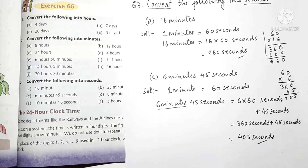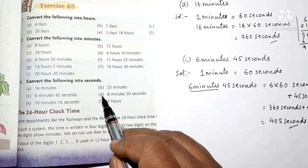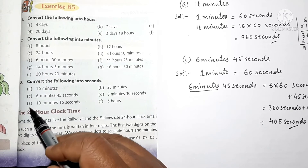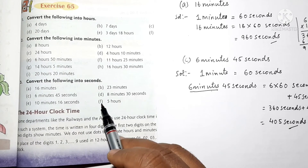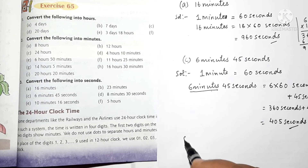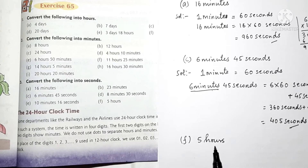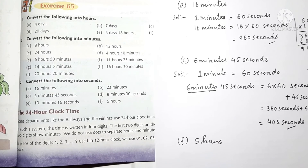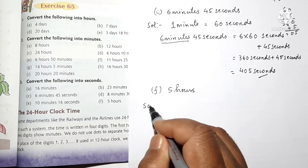So, children, similarly you can do Question D and Question E. Let me do one more question — Question F. In Question F, you have 5 hours. These 5 hours you have to convert into seconds. Let us do the solution.